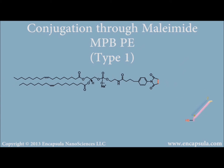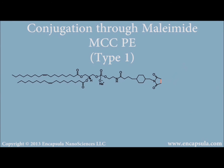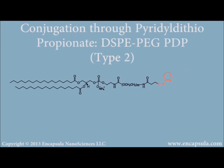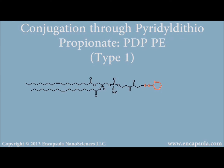Free sulfhydryl groups on fragmented antibody can couple to maleimide-containing lipids like maleimide PEG PE, MPB PE, or MCC PE, forming a stable thioether linkage. Alternatively, disulfide bridges can be reformed between the antibody fragments and active disulfide-containing lipids including PDP PE.